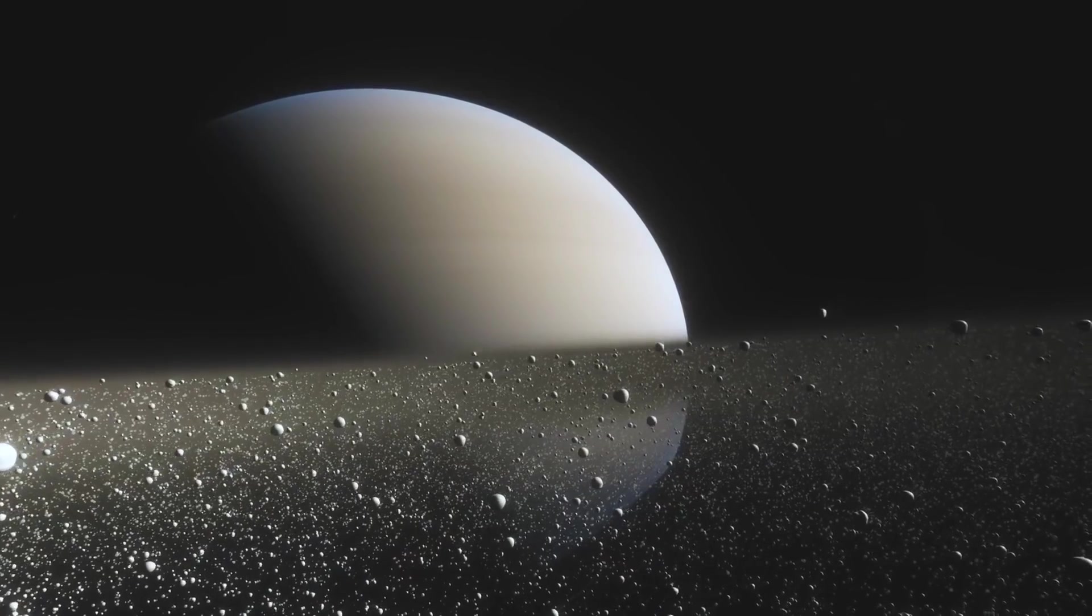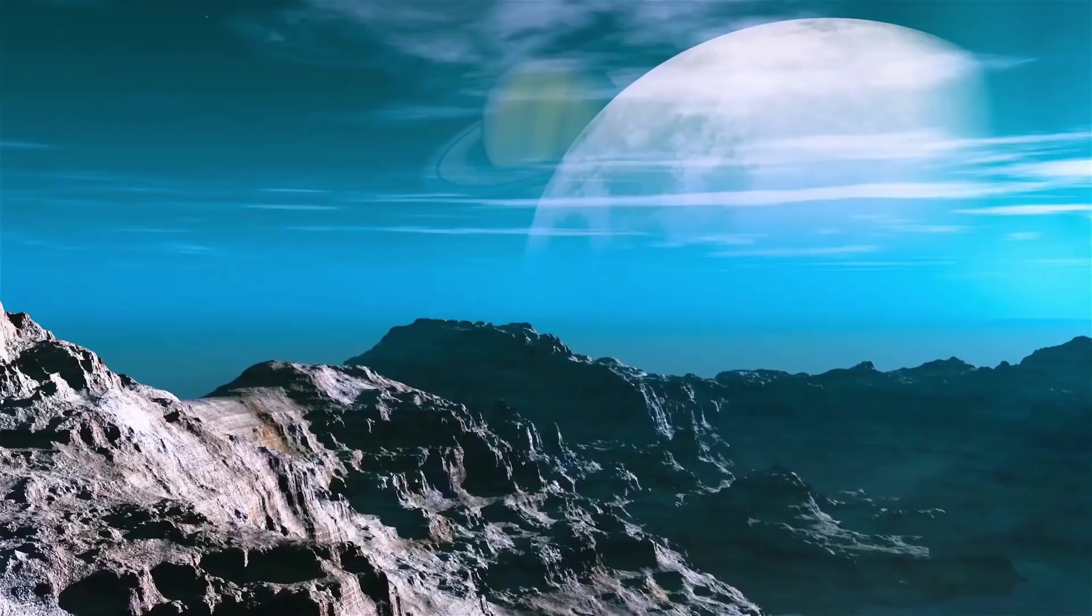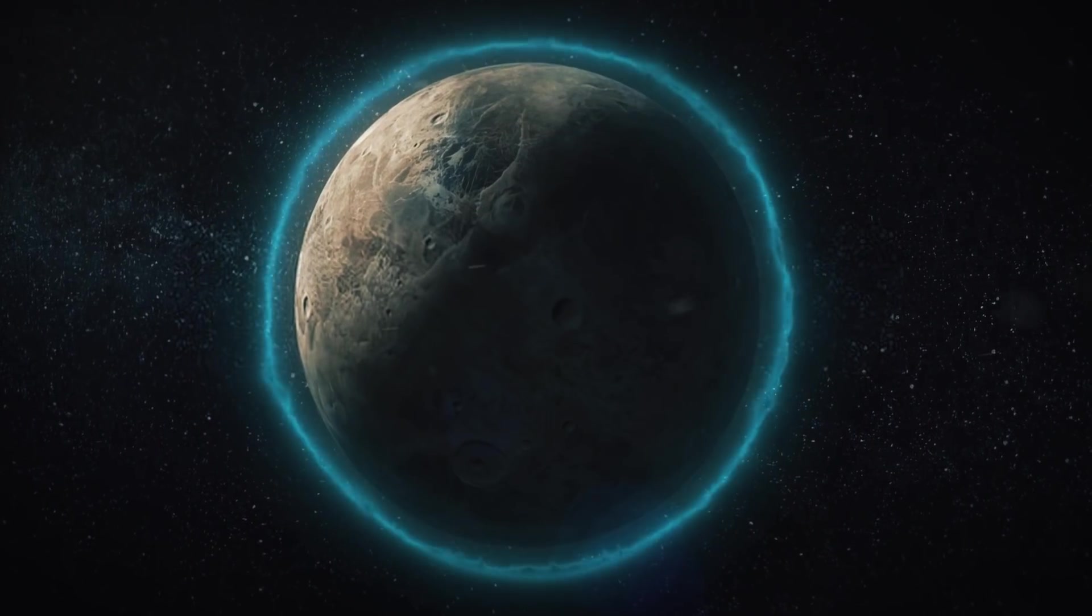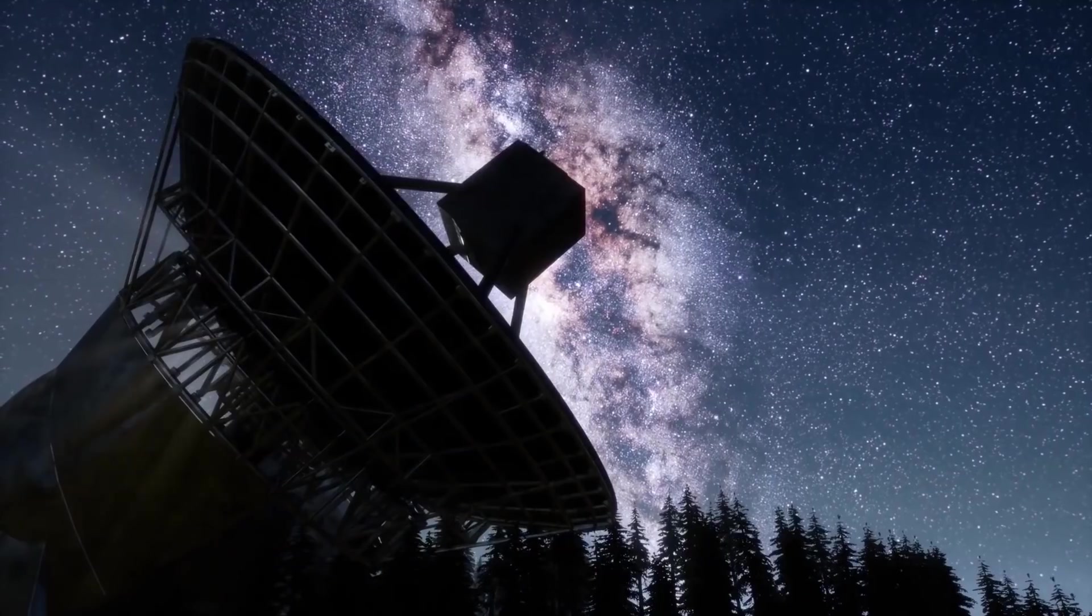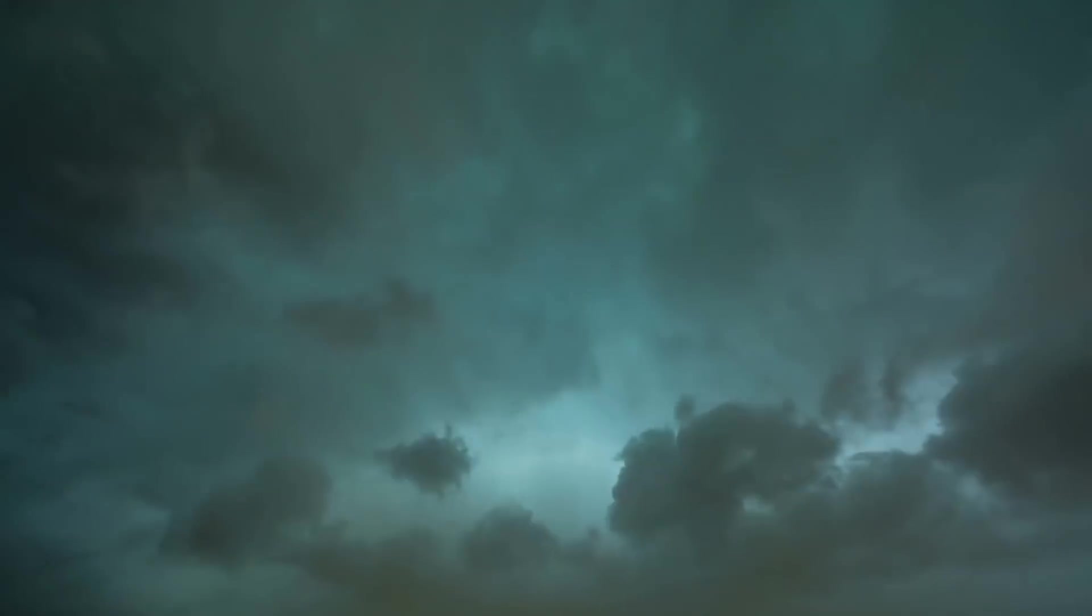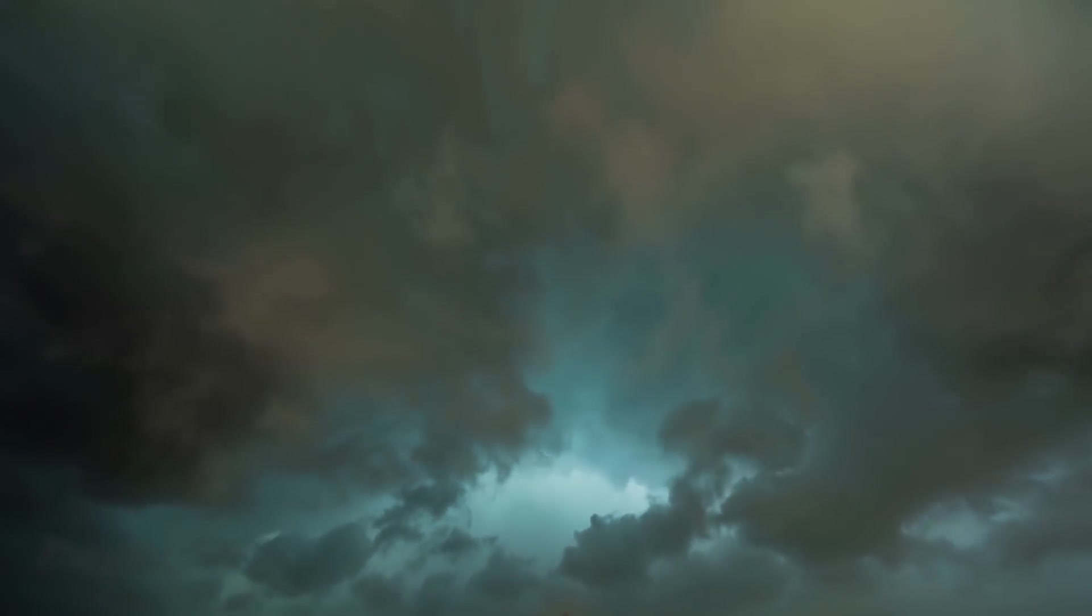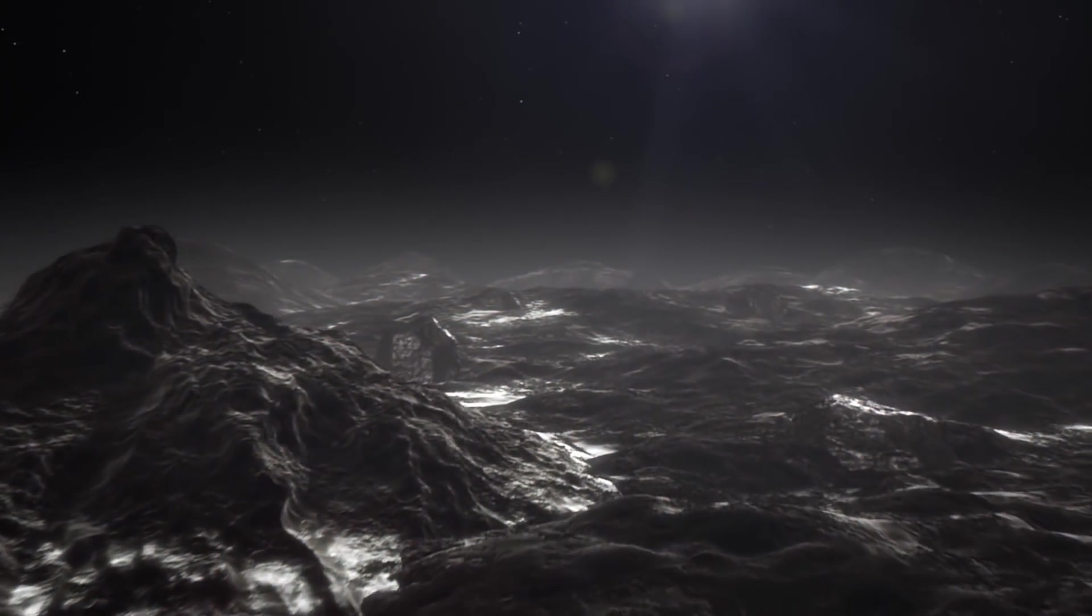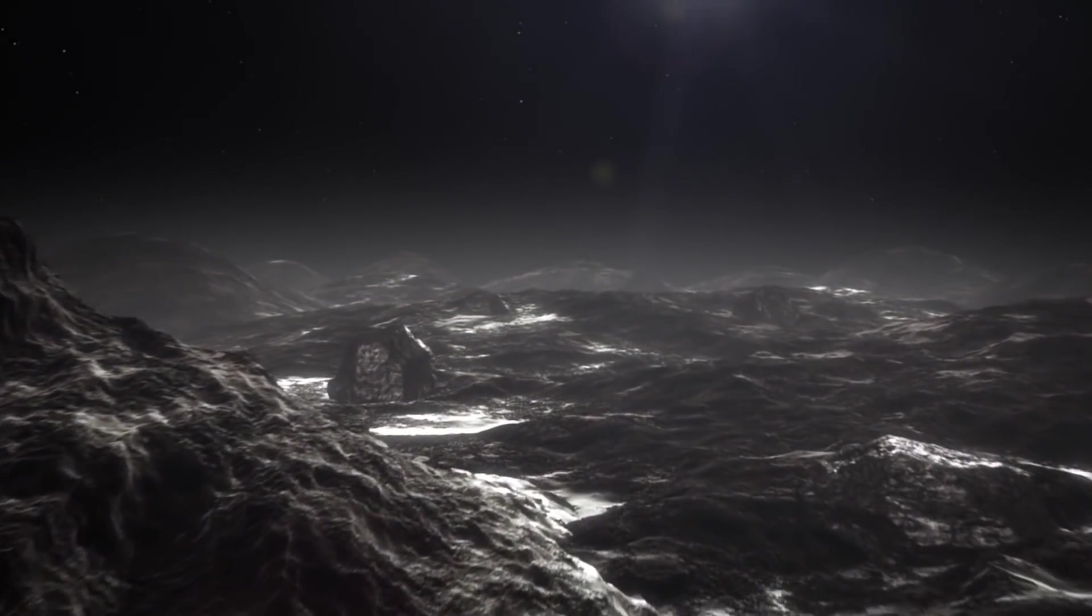As mentioned, the probe also discovered fresh facts on Saturn's biggest moon, Titan. It was discovered that Titan had a thick atmosphere that obscures its surface from visible light cameras and telescopes. Titan's atmosphere, like Earth's, is mainly nitrogen. Nevertheless, its surface pressure is 1.6 times that of Earth's.